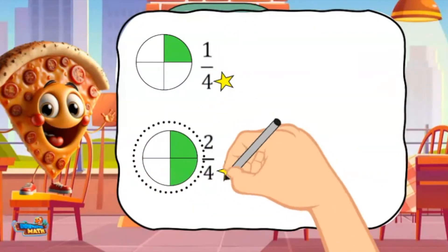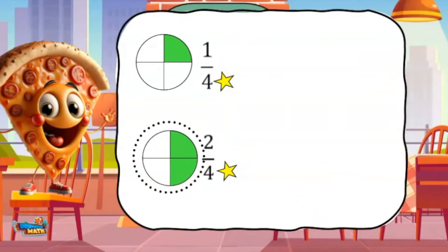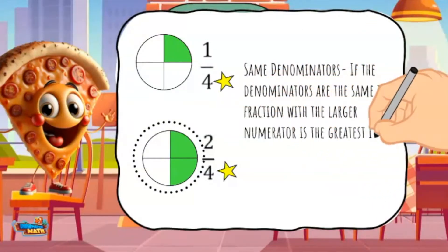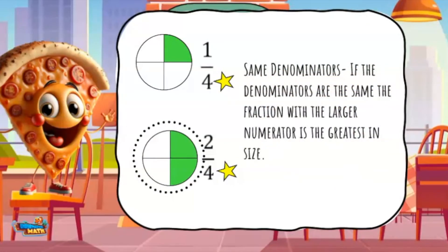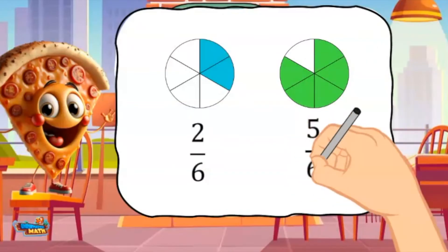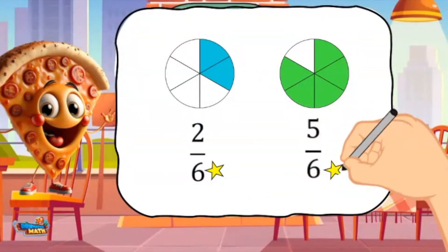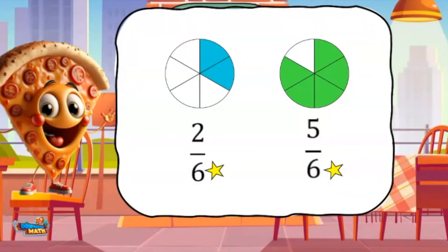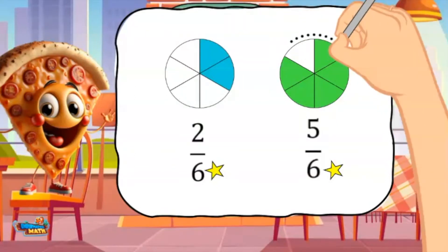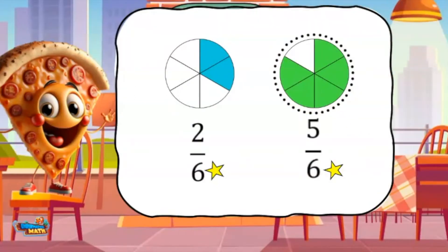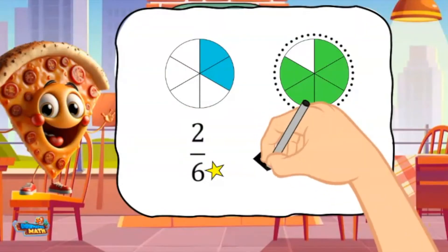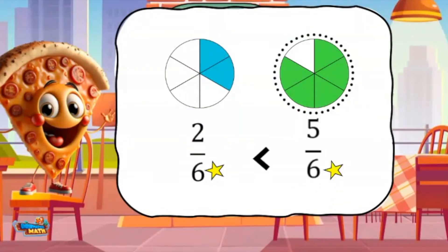When fractions have the same denominator, the fraction with the larger numerator is the greatest in size. Here are the fractions 2 6ths and 5 6ths. The denominators are the same, so the fraction with the larger denominator is the greatest fraction. This means 2 6ths is less than 5 6ths.